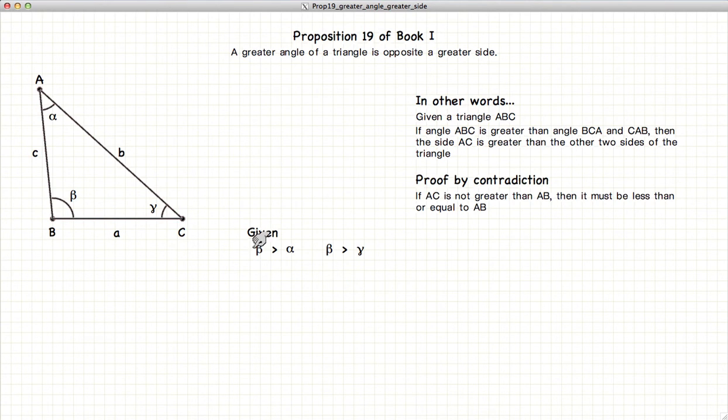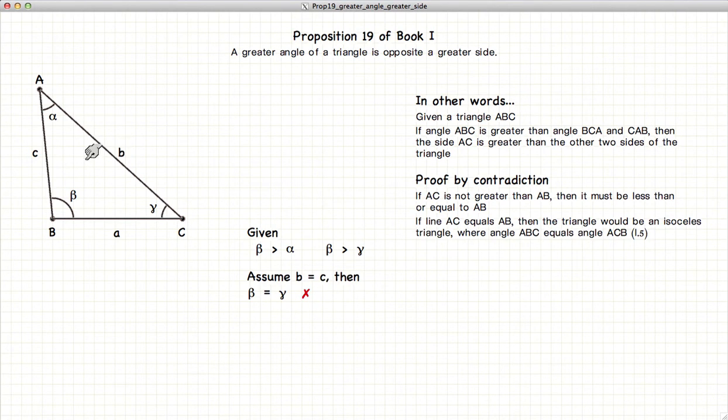So given that beta is greater than alpha and beta is greater than gamma, let's assume that B is equal to C.